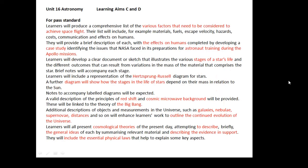Okay, so looking again at these criteria for a pass, you could go through it with a highlighter and try and figure out what your different sections are going to be. It appears that the first part of it is to do with kind of space flight and humans in space.